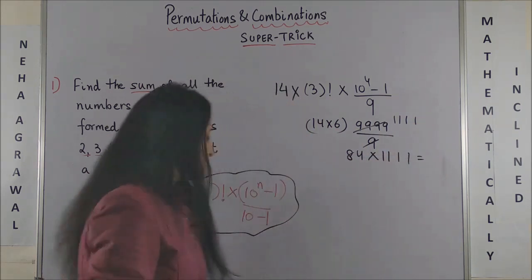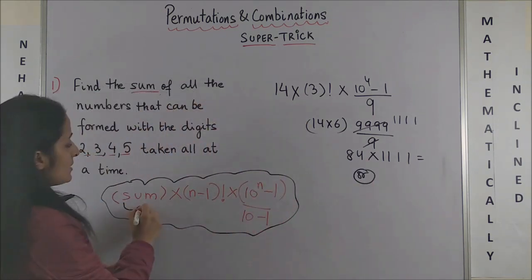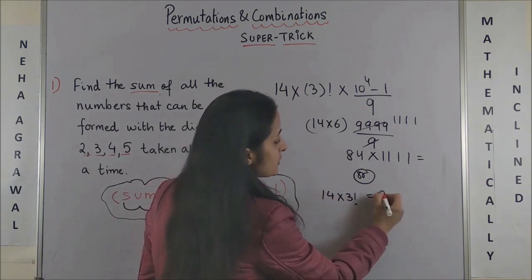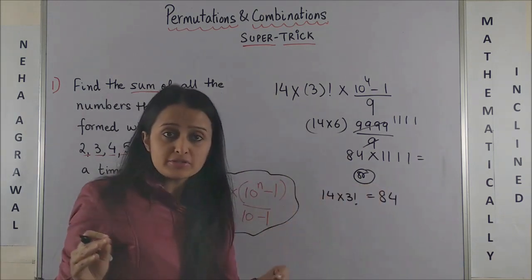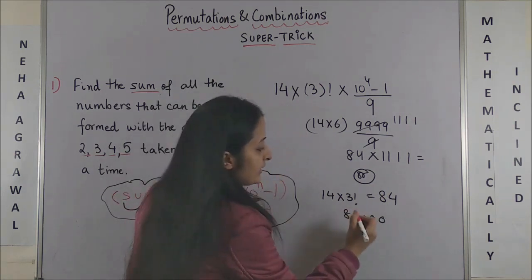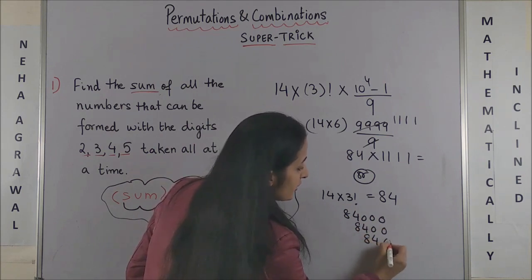Another way is that you take the formula up till this point, so you get sum of digits into 3 factorial which gives you 84. Now you know it's going to be a four-digit number, so you write 84,000, then 8,400, then 840, and then 84.